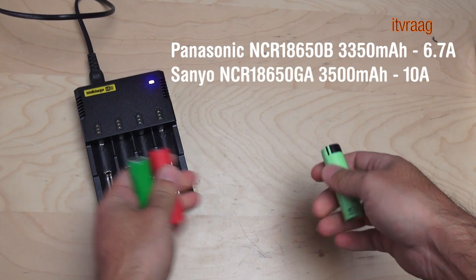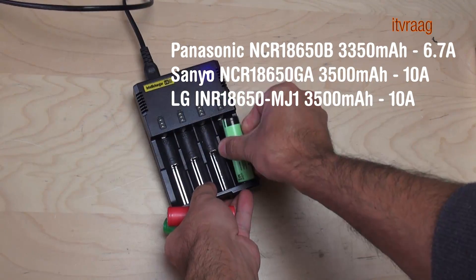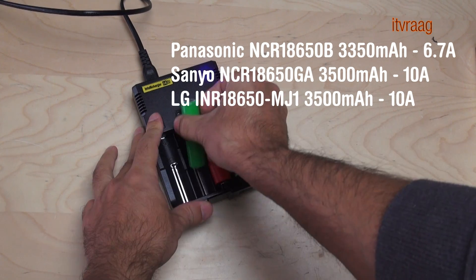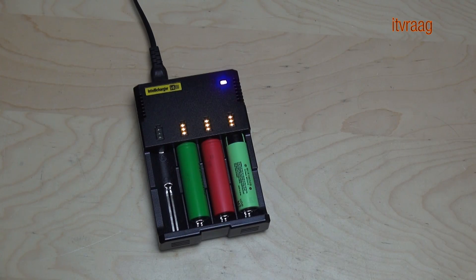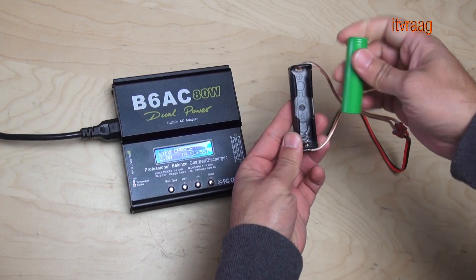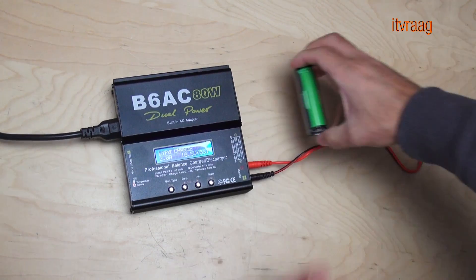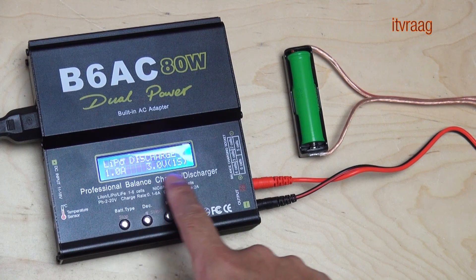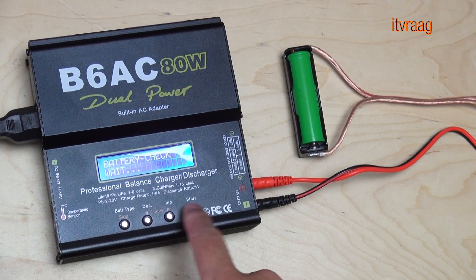I'm testing battery cells from Panasonic, Sanyo and LG. First I charge them using my IntelliCharger i4, then I discharge them using an RC charger which shows the amount of amps when discharged up to 3 volts.